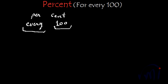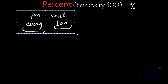Percent is denoted by this sign — a slanting line with a small circle above and a small circle below. So we know percent means for every hundred. Let me erase this and explain what it actually means and why we need it.